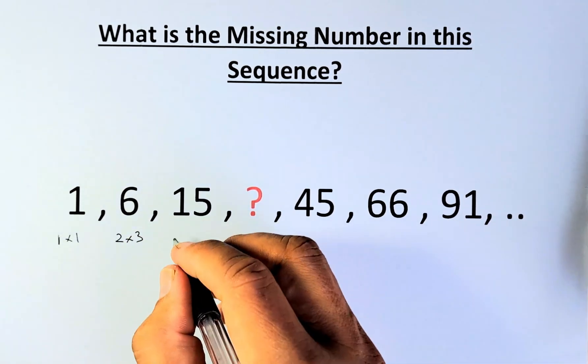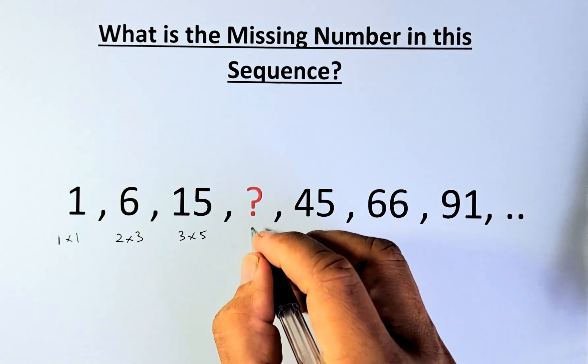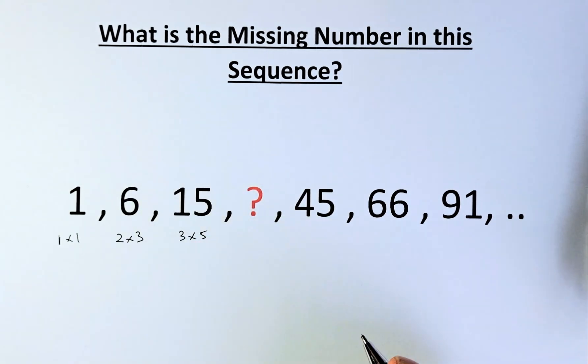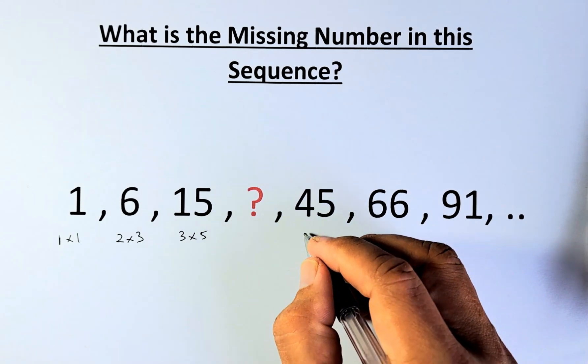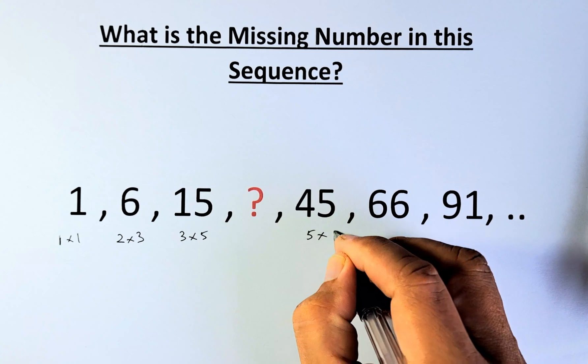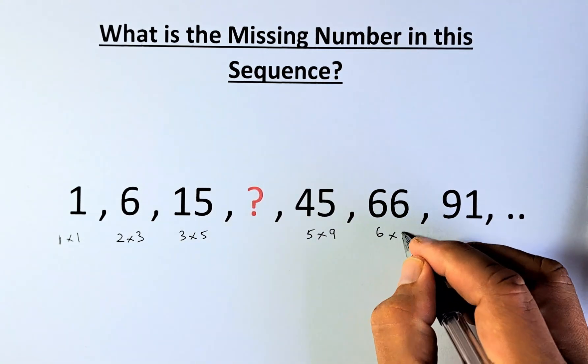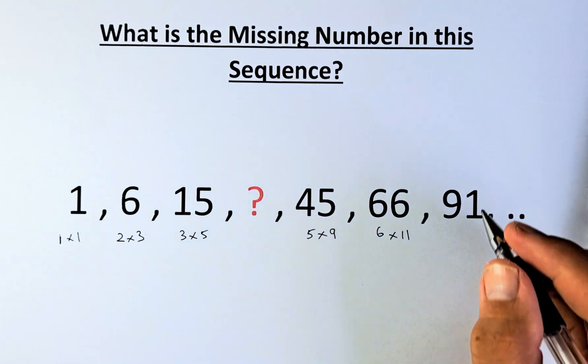And then we will leave it later on. 45 is made up of 5 multiplied by 9, 66 is made up of 6 multiplied by 11, and 91 is made up of 7 multiplied by 13.